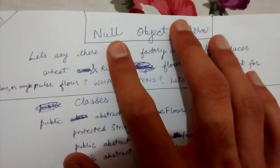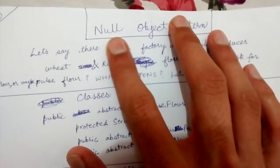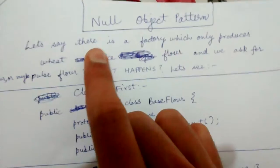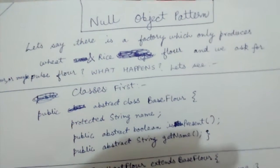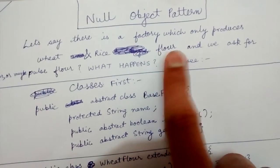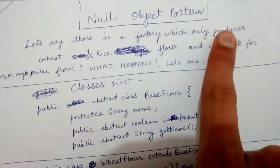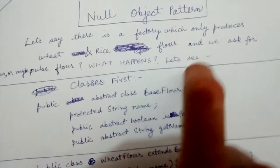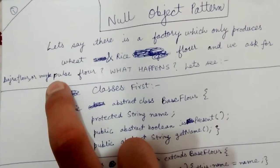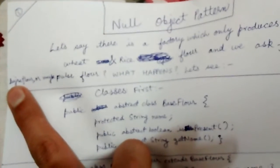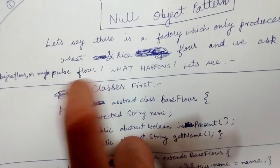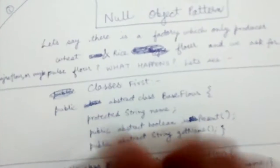Today we'll be looking at a very simple and interesting design pattern, the Null Object Pattern. Let's say there is a factory which only produces wheat and rice flour—a flour factory like we see in India, the Chakki Ata. If we ask for Bajra flour, which is a crop native to Rajasthan, or maybe pulse flour, what happens? Let's see.